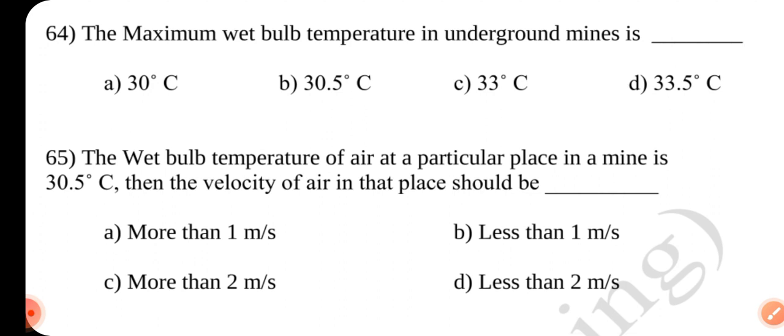Question number 64. The maximum wet bulb temperature in underground mines is dash. Answer is D. 33.5 degrees Celsius.